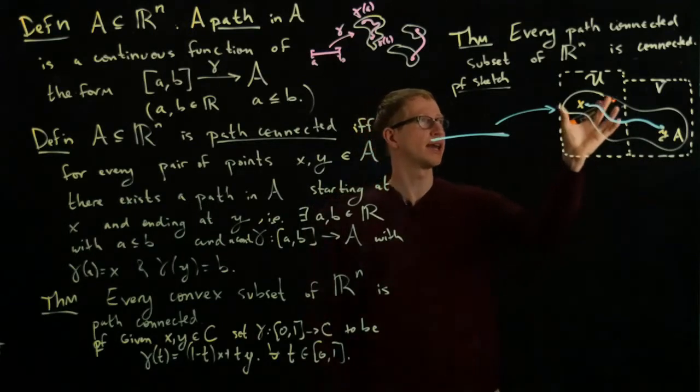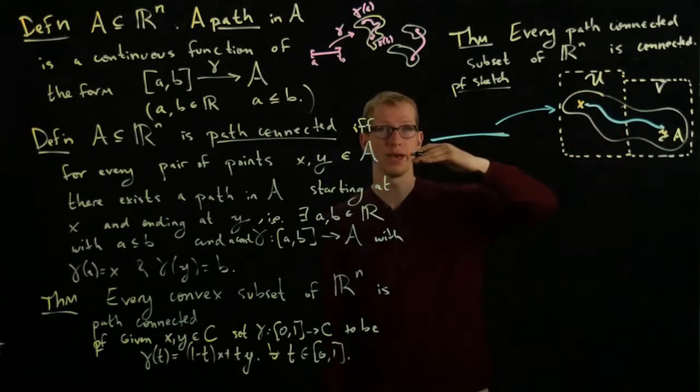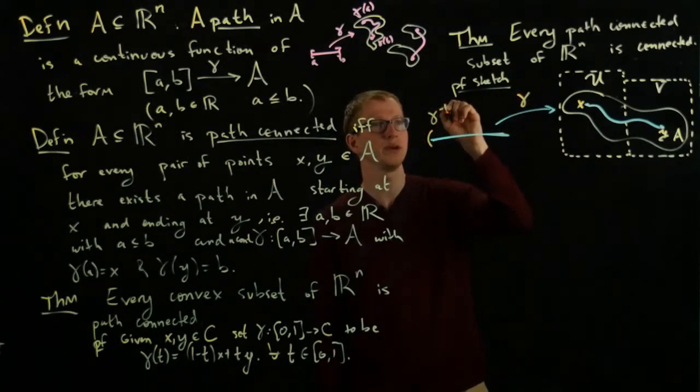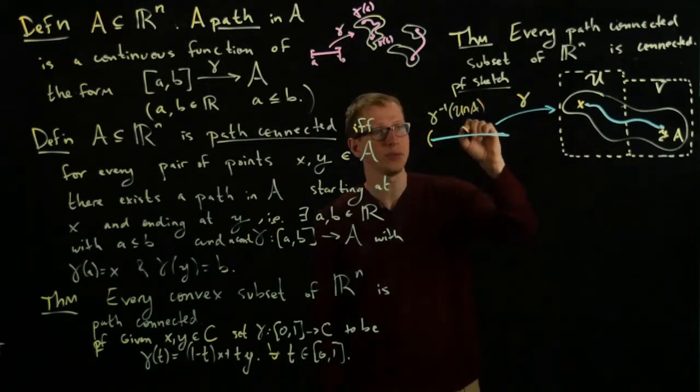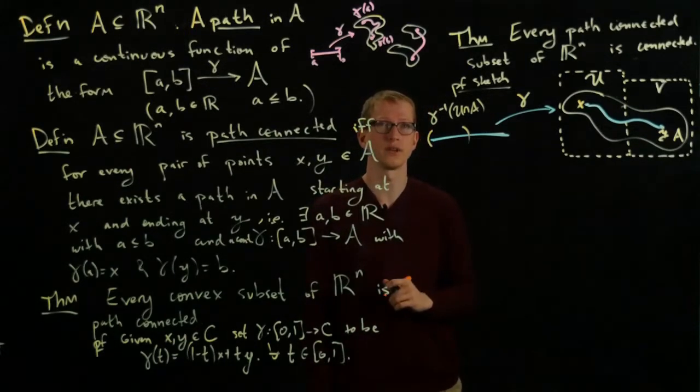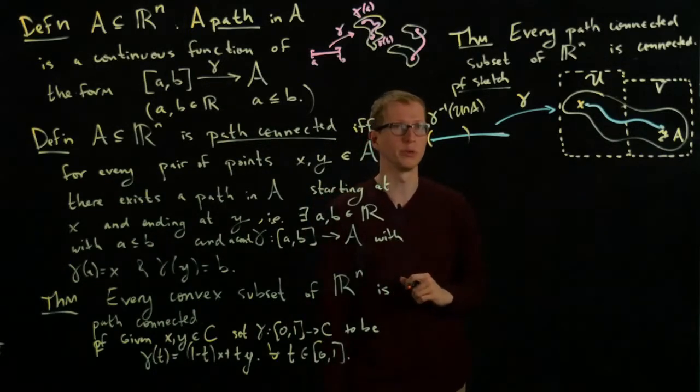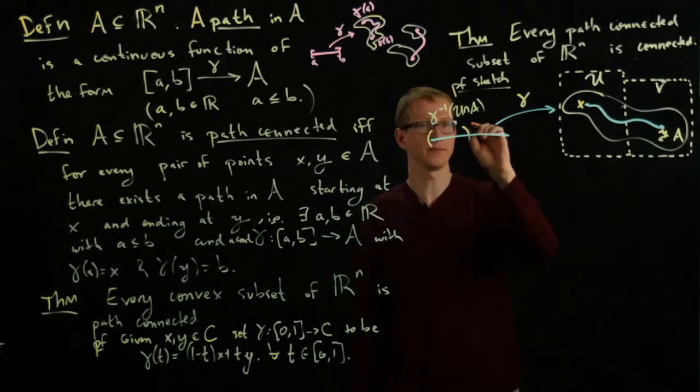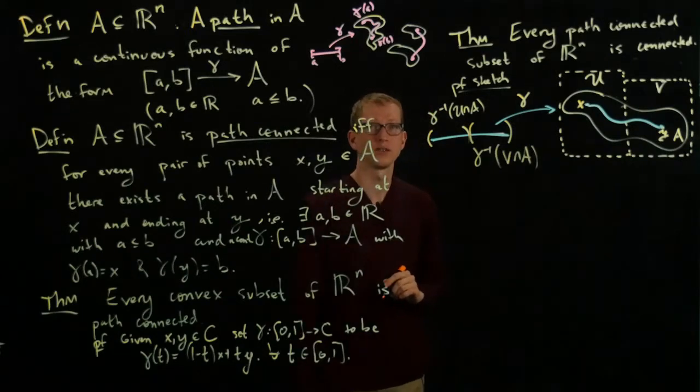Then what I can do is restrict this open set to this side and pull that back. So let's call this function gamma. And I'll pull back gamma inverse of U, obviously intersect A. And that'll be an open set here. This comes from the definition of continuity, an alternate definition of continuity that says a function is continuous if and only if the inverse image of any open set is open. Similarly, I can pull back the open set V intersect A.